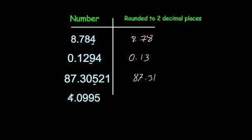Finally, 4.0995 rounded to two decimal places. We underline the third decimal place — it's a 9, so we round up. Rounding the 9 up gives 10, which carries over, so the answer is 4.10. That's how you round numbers to one or two decimal places.